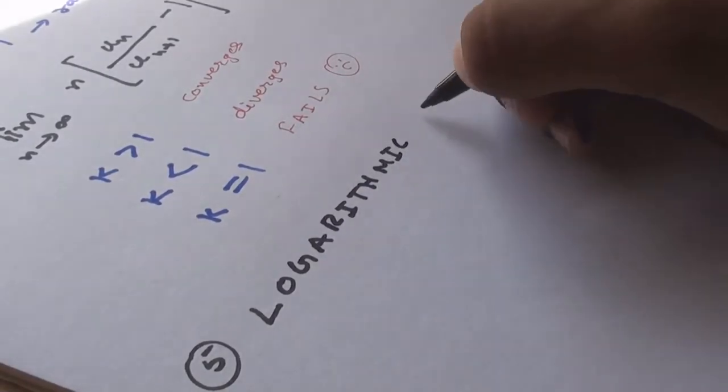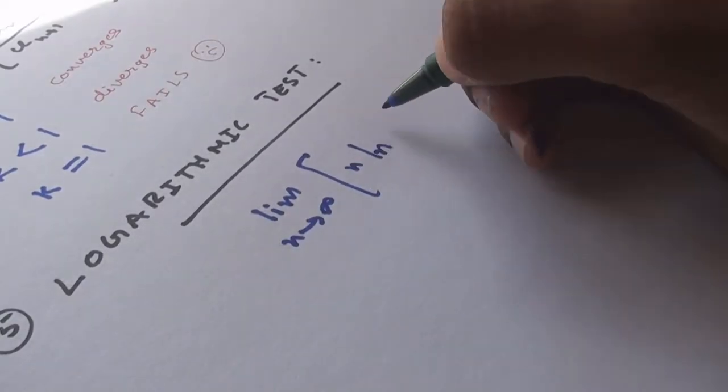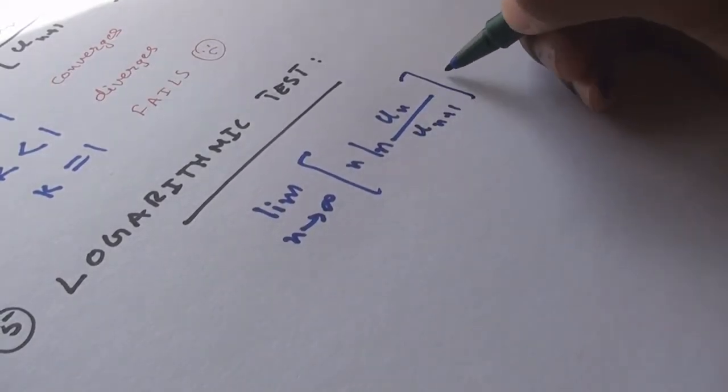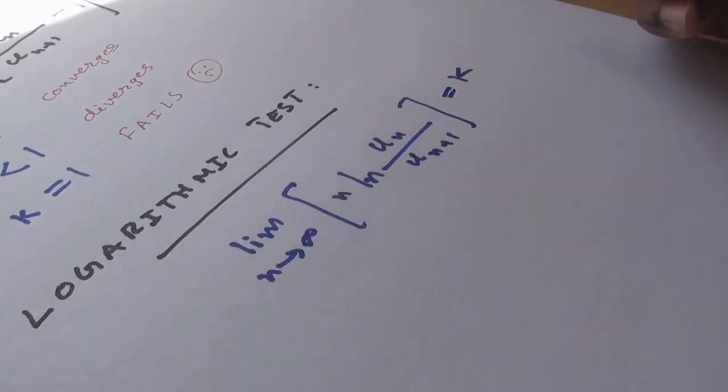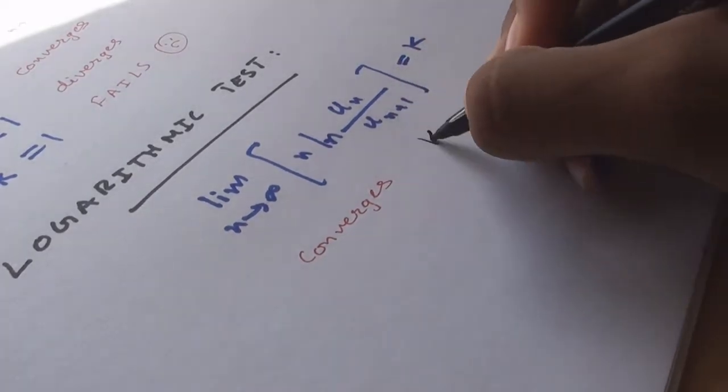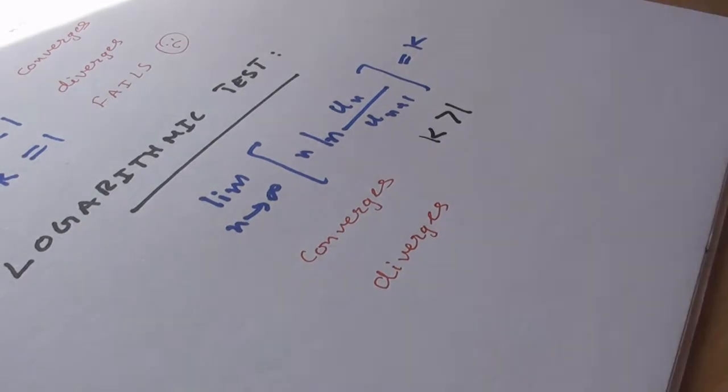Which is if the lim[n·log(un/un+1)] as n→∞ equals k, then again the series converges for k > 1, diverges for k < 1, and fails for k = 1.